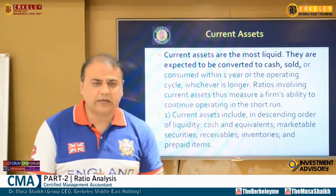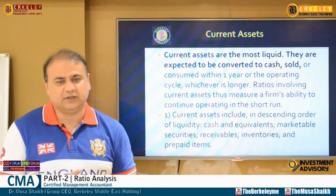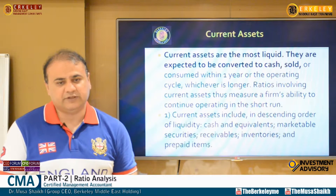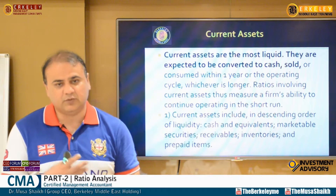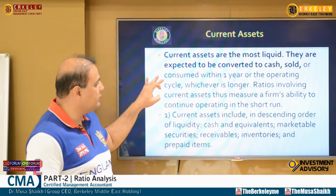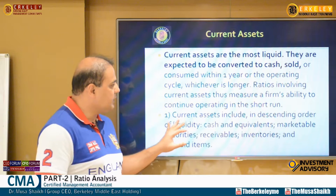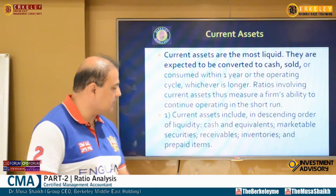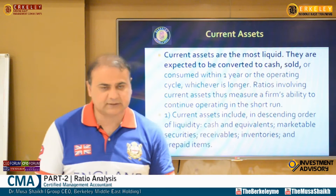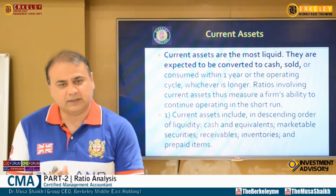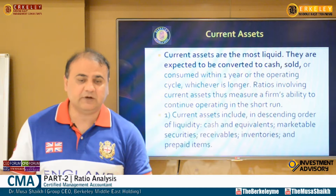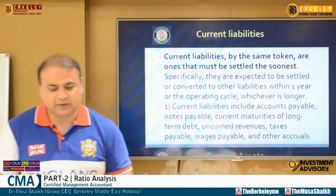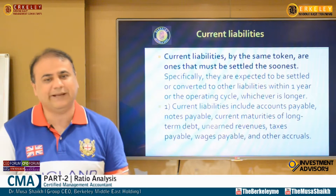Current assets are those with a useful life of less than one year that will convert into cash. They are expected to be converted to cash, sold, or consumed within one year. Current assets include cash, cash equivalents, marketable securities, receivables, inventories, and prepaid items. The most liquid is cash, and the least liquid is inventory, since inventory may take years to sell and convert to cash. That's why many ratios exclude inventory and receivables.